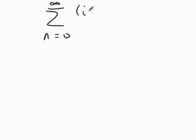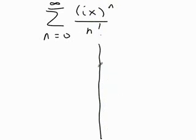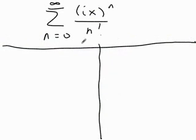Let's take this series and substitute i times x. That's the series n equals 0 to infinity, i times x to the n power over n factorial.